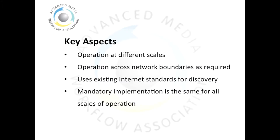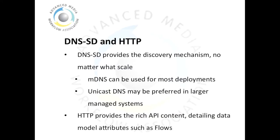The discovery and registration specification described here has been designed to operate in a number of different use cases. It's intended to support operation at different scales, from two single devices that need to communicate with each other, right up to a network of thousands. Where possible, existing internet standards are used. For discovery, we make use of the standards for DNS service discovery, and HTTP is used for all of the API communications. A key aspect of the specification is that the mandatory implementation for all nodes on the system is exactly the same, and allows for various different scales of operation. Throughout this specification, the internet standard for DNS service discovery is used to provide the discovery mechanism no matter what the scale.